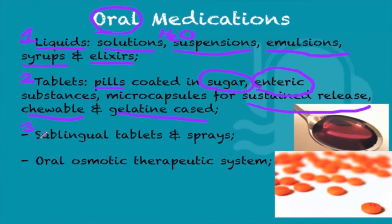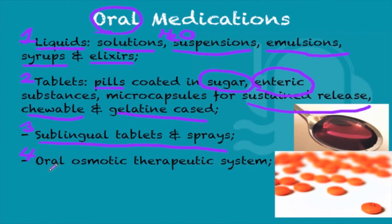Next, you have sublingual tablets or sprays. These are absorbed into the superior vena cava and avoid the first pass effect of the liver. Similar to these are buccal tablets, which are absorbed in the oral mucosa. The last one is the oral osmotic therapeutic system, where water enters a semi-permeable membrane and the dissolved drug escapes through a gap.